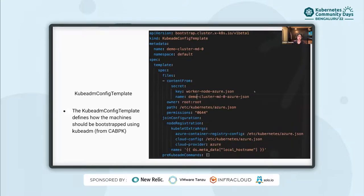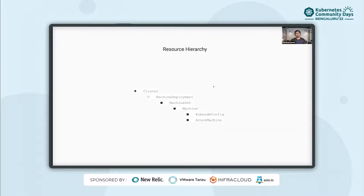The KubeADM config template defines how the machine should be bootstrapped and joined to the cluster using KubeADM from a bootstrap provider. Notice that this configuration was referred back in machine deployment, and for all the machines of that machine deployment this bootstrap config will be used. Now you can see on the screen the resource hierarchy. We now understand how machine deployment manages worker machines using similar constructs like a deployment-to-pod management in Kubernetes, and how CAPI uses templates to create the actual Azure machines using Azure machine templates, which are finally reconciled by CAPZ. The cluster object helps set up the pod CIDR and other cloud-agnostic settings, setting up owner references and statuses, basically coordinating the overall cluster operations.